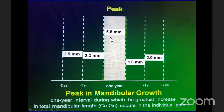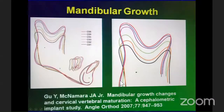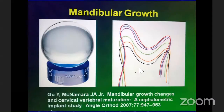The one-year period during which the greatest increase in total mandibular length occurs — from condylion to gnathion — in individual patients has a maximum increase of around 5.5 mm. This was a study by McNamara and Gu from Peking. Between C3 and C4, the maximum growth changes take place. So C3 through C6 are the stages we should take into consideration when treating patients with functional appliances.